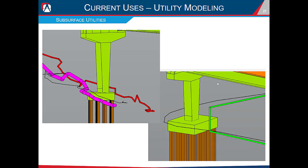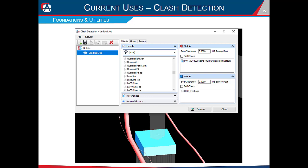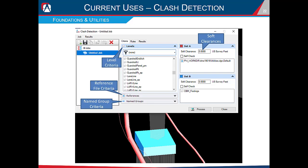We also use OBM to model underground utilities — using 3D data from survey files with X, Y, and Z data, or 2D utility files with only X and Y data where we estimate the Z. Clash detection is another great use: the biggest application is checking for clashes between utilities and foundations. Criteria options are highly customizable — we can check between levels, reference files, or named groups, check for hard clashes or soft clashes to ensure a minimum clearance distance. These clash detection reports can be saved and run daily for cross-discipline coordination.